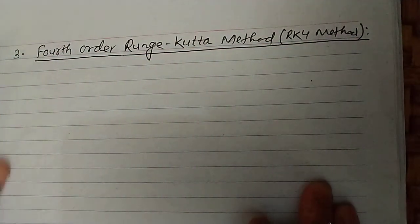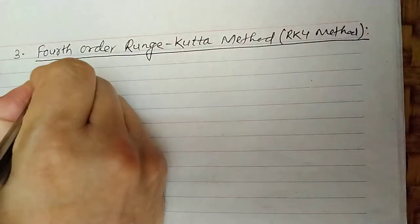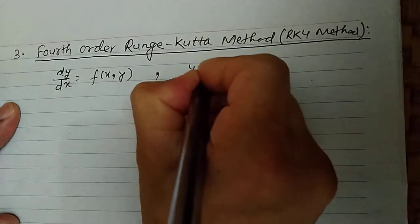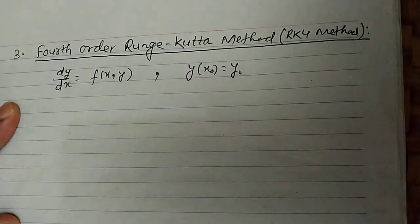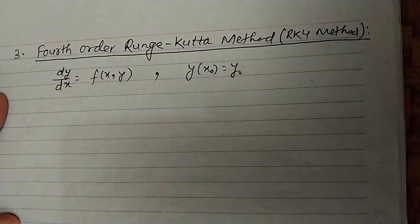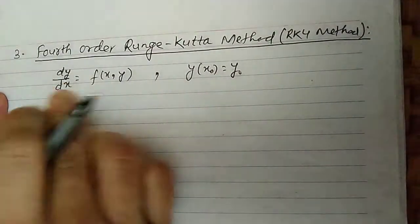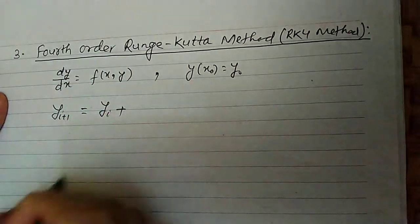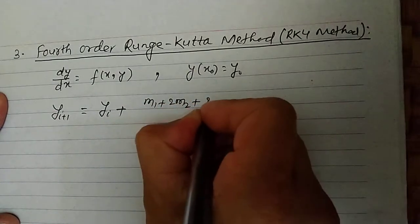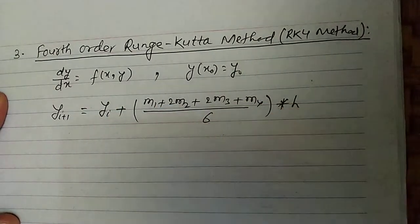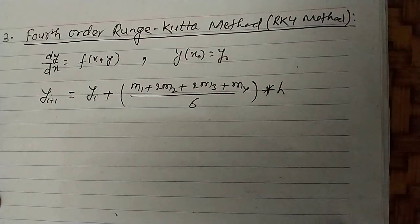The differential equation will be given as in the previous problem. dy/dx will be given in the problem, and its initial condition will also be given. The step size may be given in the problem or we can assume it suitably. The formula for the RK4 method is: y(i+1) equals y(i) plus (m1 plus 2·m2 plus 2·m3 plus m4) divided by 6, into h.